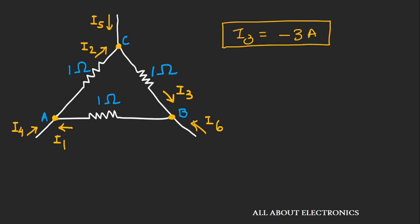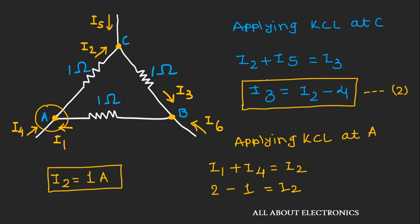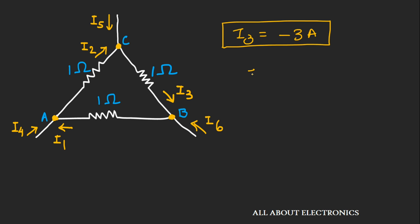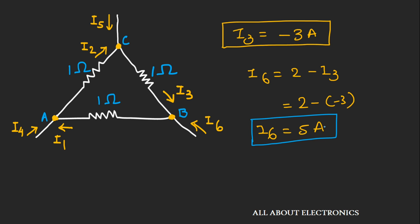Now we can easily find I6. From equation 1, I6 = 2 − I3. Substituting I3 = −3, we get I6 = 2 − (−3) = 5 amperes. In this way, using Kirchhoff's Current Law we can find the currents in any circuit. I hope you understood what KCL is and how to use it to find different currents in an electrical circuit. If you liked this video, hit the like button and subscribe to the channel for more such videos.